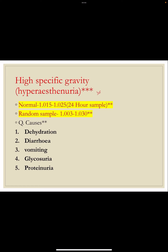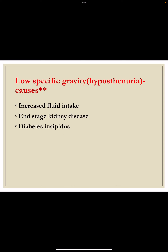The causes of increased specific gravity — a condition called hypersthenuria — include dehydration, diarrhea, vomiting, glycosuria, and proteinuria, as increased solutes in urine raise the specific gravity. The normal specific gravity of a 24-hour sample is between 1.015 to 1.025, while a random sample ranges between 1.003 to 1.030. Causes of decreased specific gravity include increased fluid intake, end-stage renal disease, and diabetes insipidus, where decreased solutes in urine cause a decrease in specific gravity.